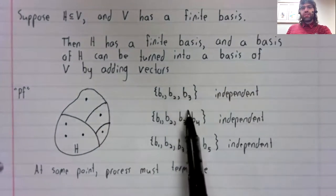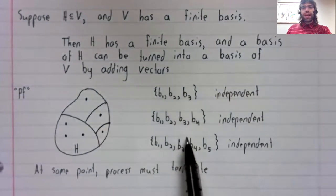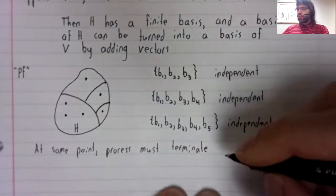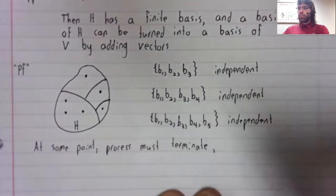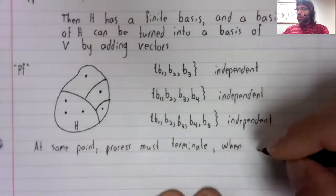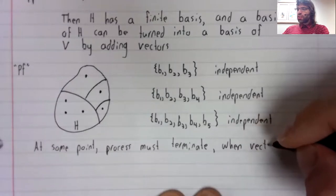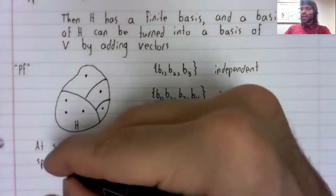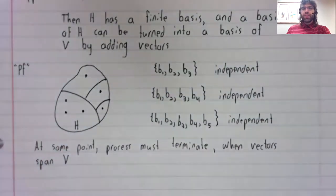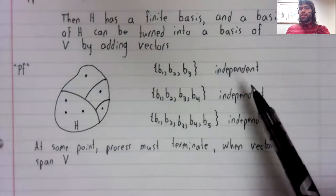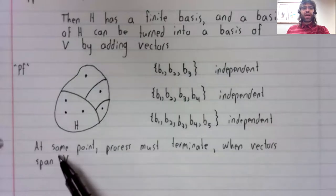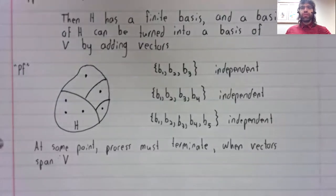So this process terminates when the vectors span V. And once we have a linearly independent set of vectors that spans V, we have a basis of V.